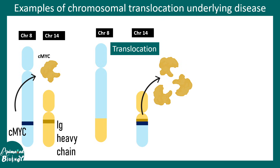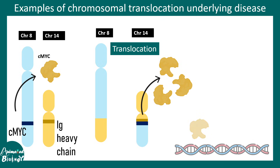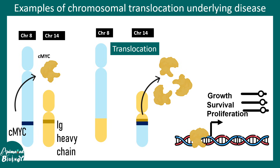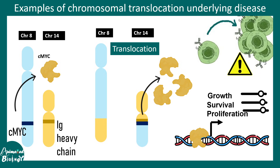That is why CMYC is produced in a massive amount — much more than it normally should be. Too much CMYC can regulate several genetic changes; it can activate genes responsible for growth, survival, and proliferation, all in an uncoordinated fashion, which gives rise to excessive proliferation of lymphocytes and leads to Burkitt's lymphoma.